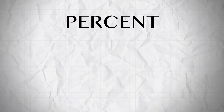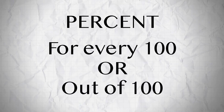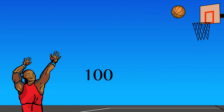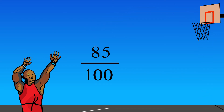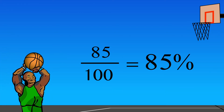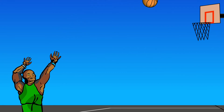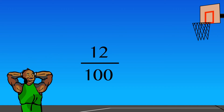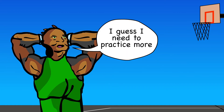Percent means for every 100 or out of 100. For example, a person shoots 100 shots at the basket from the free throw line and makes 85 of them — 85 out of 100 is 85%. Another player shoots 100 shots and only makes 12 of them — 12 out of 100 is 12%.